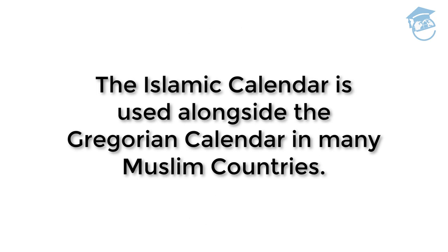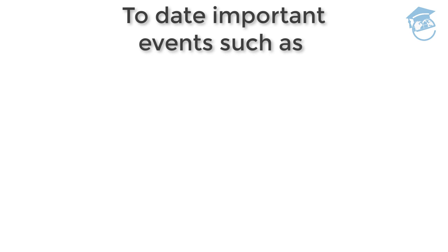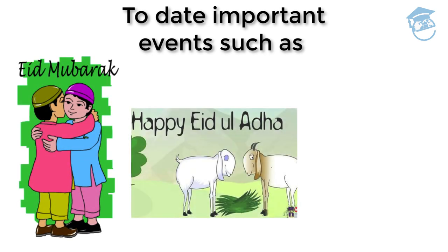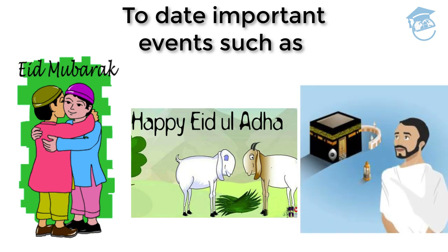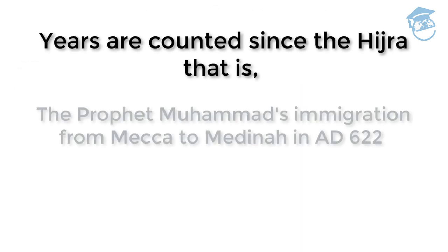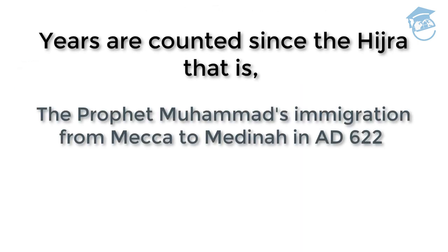The Islamic calendar is used alongside the Gregorian calendar in many Muslim countries to date important events, such as Eid al-Fitr, Eid al-Adha, and the time of the Hajj. Years are counted since the Hijra — that is, the Prophet Muhammad's emigration from Mecca to Medina in 622 AD.